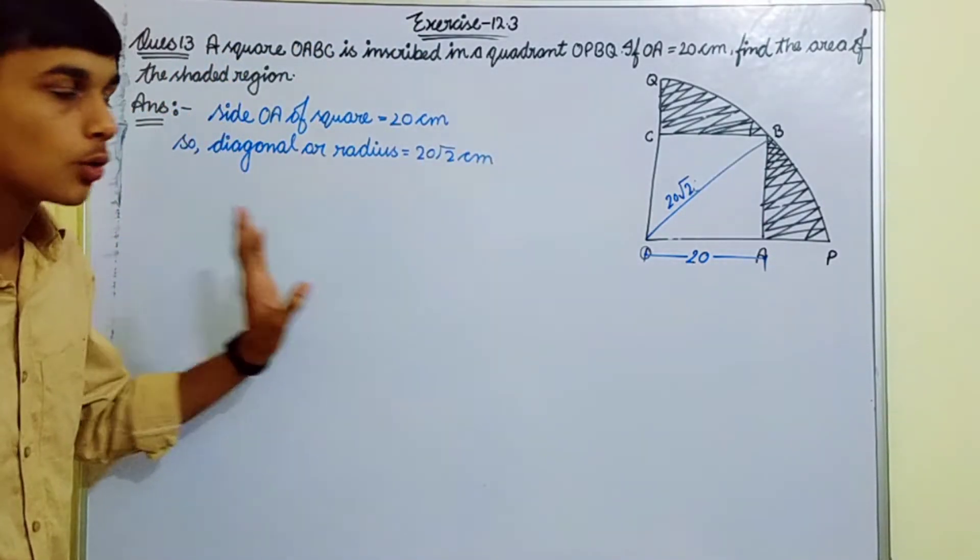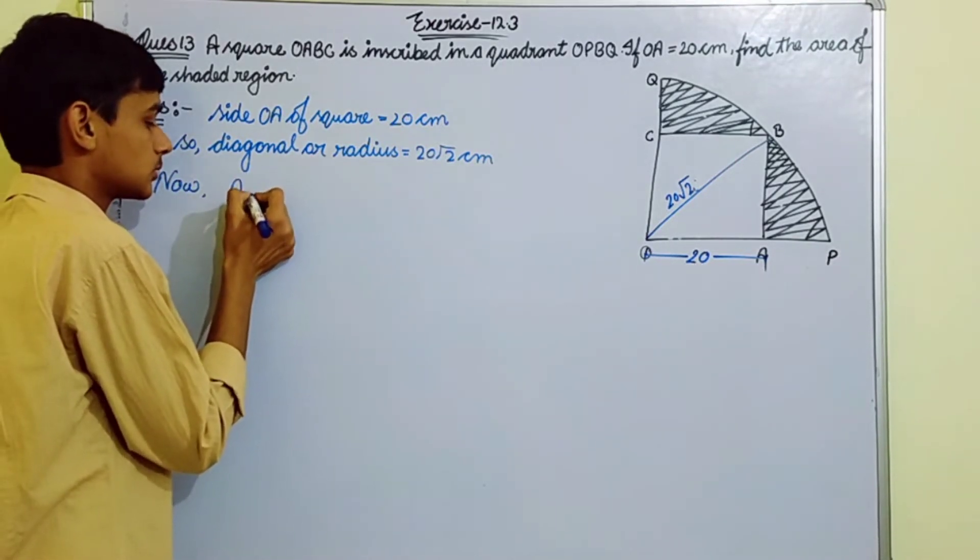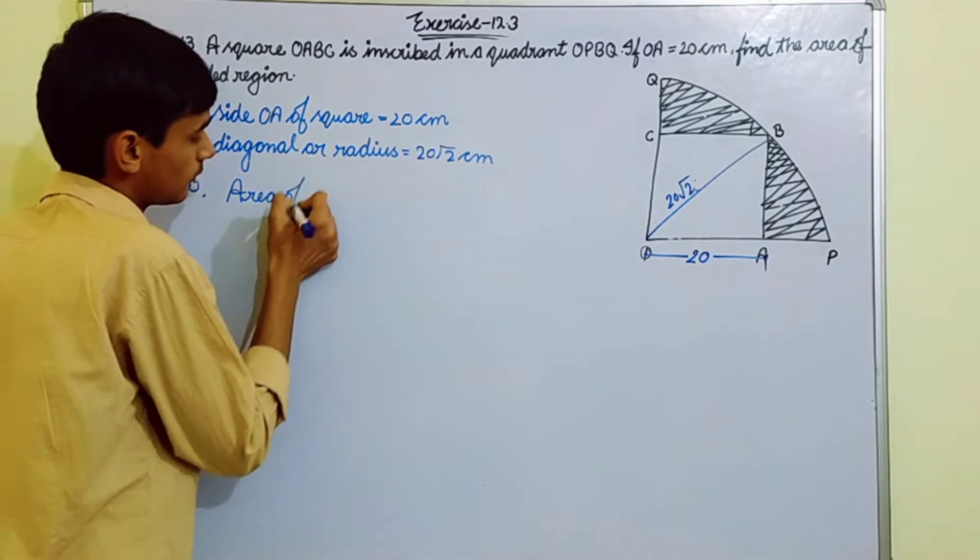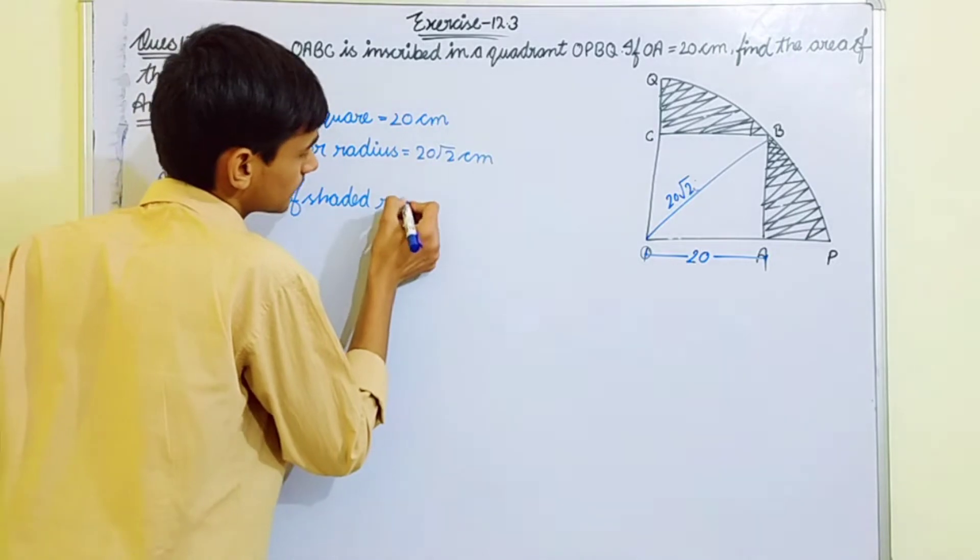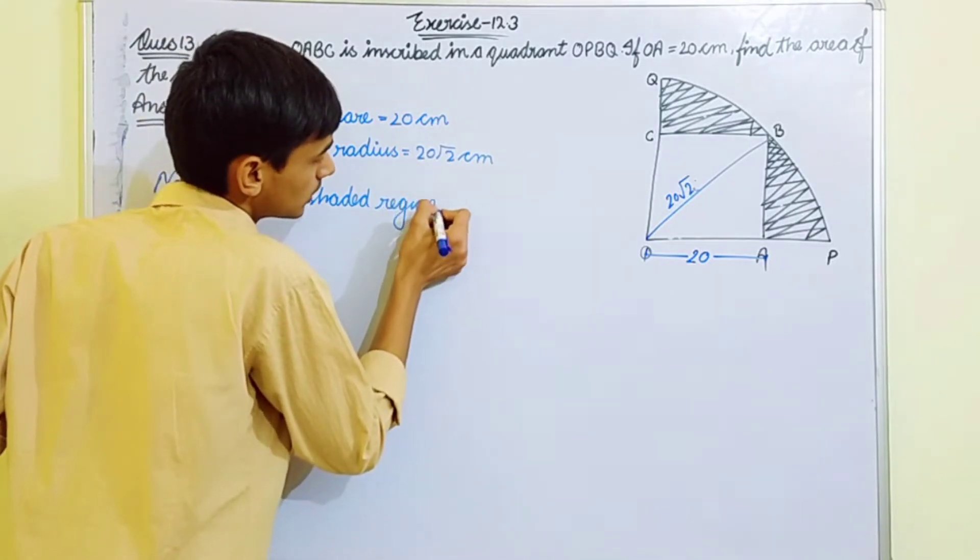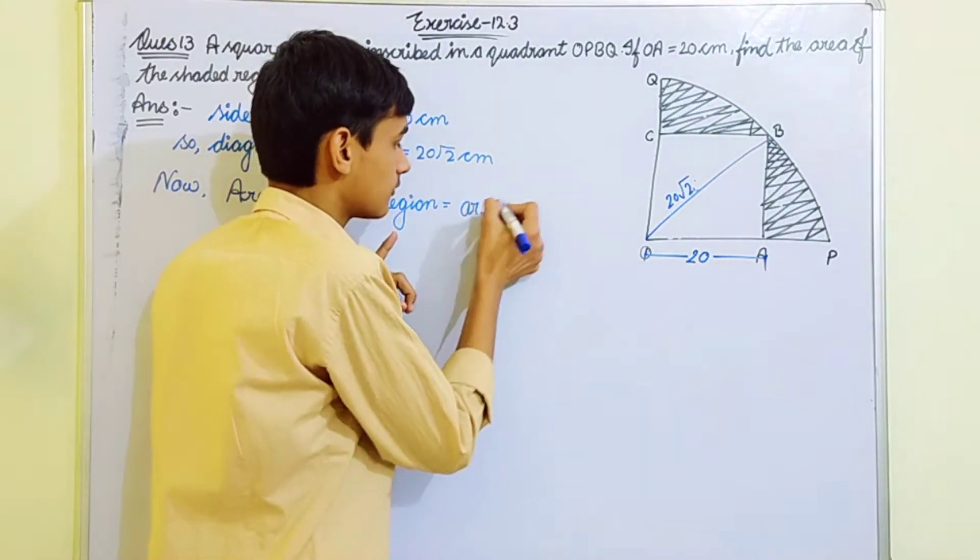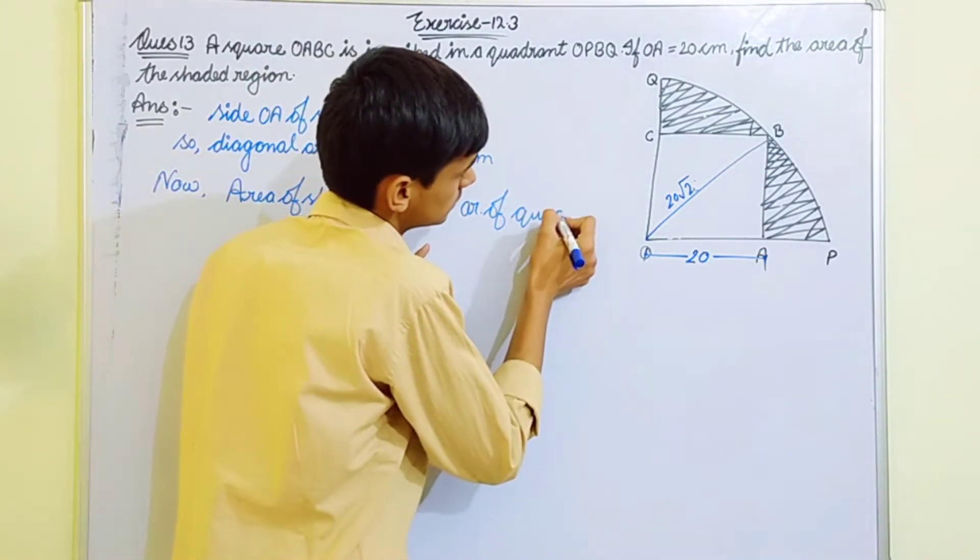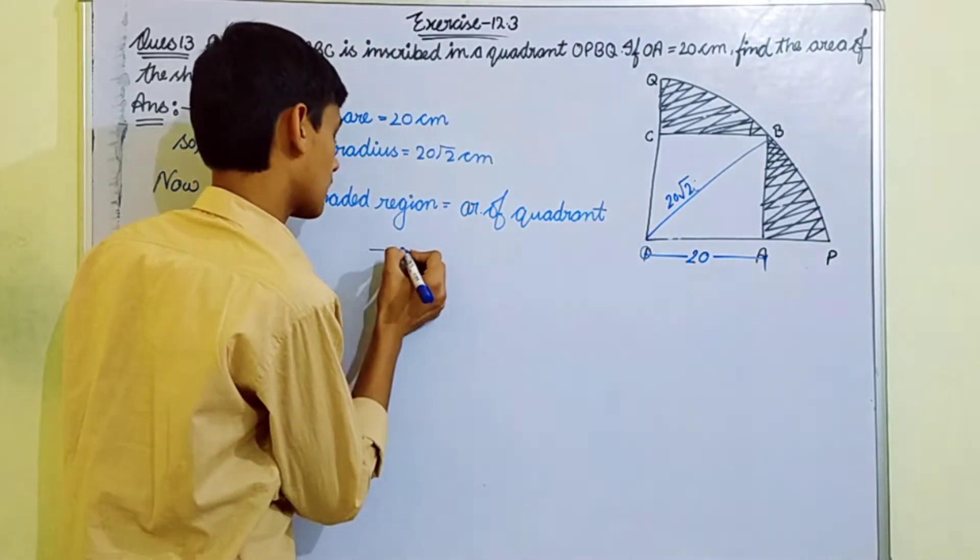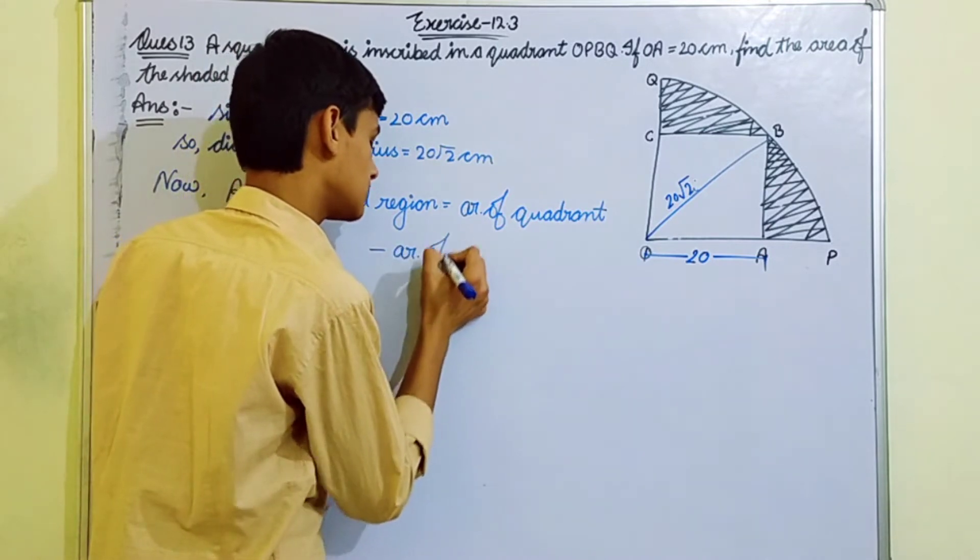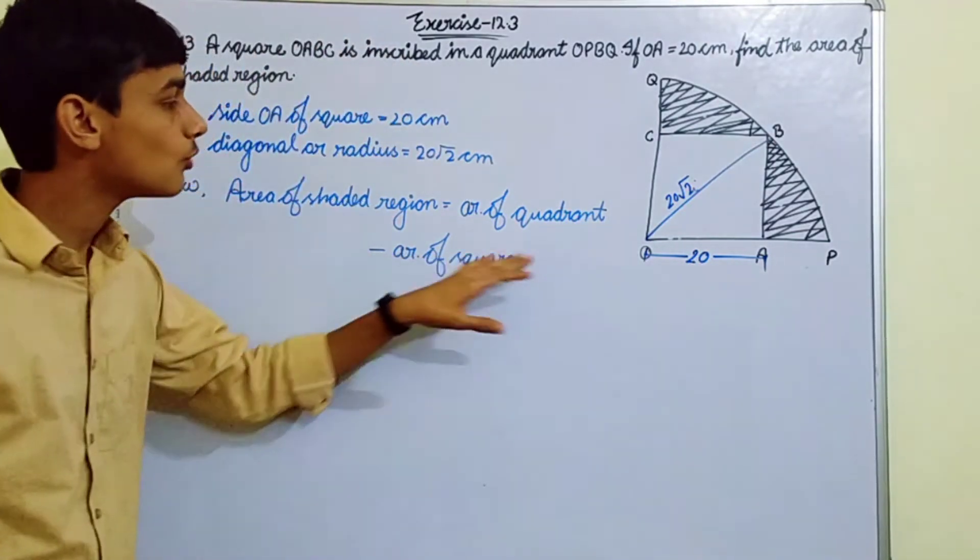Now area of shaded region is equals to area of quadrant minus area of square. Area of quadrant minus area of square.